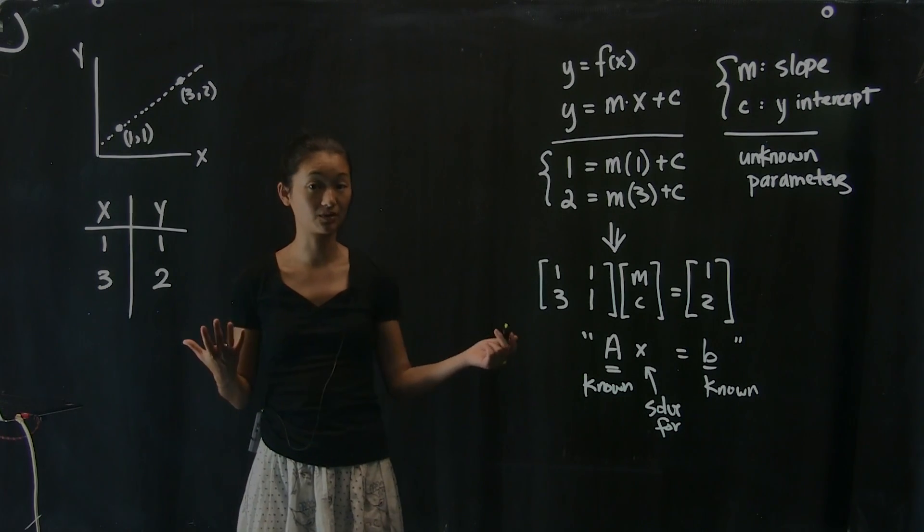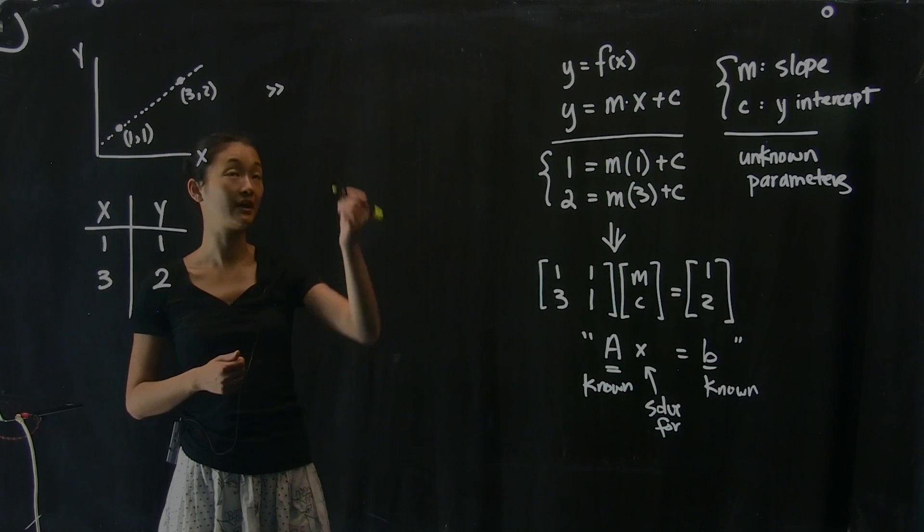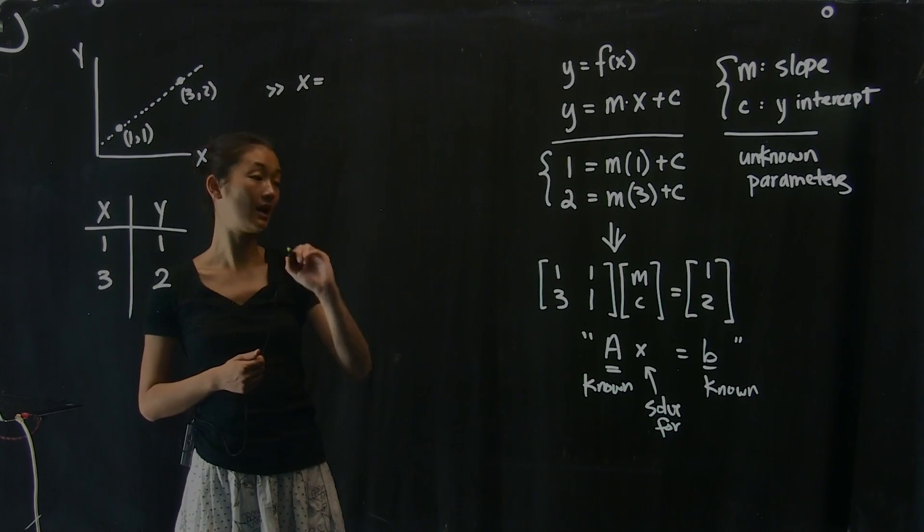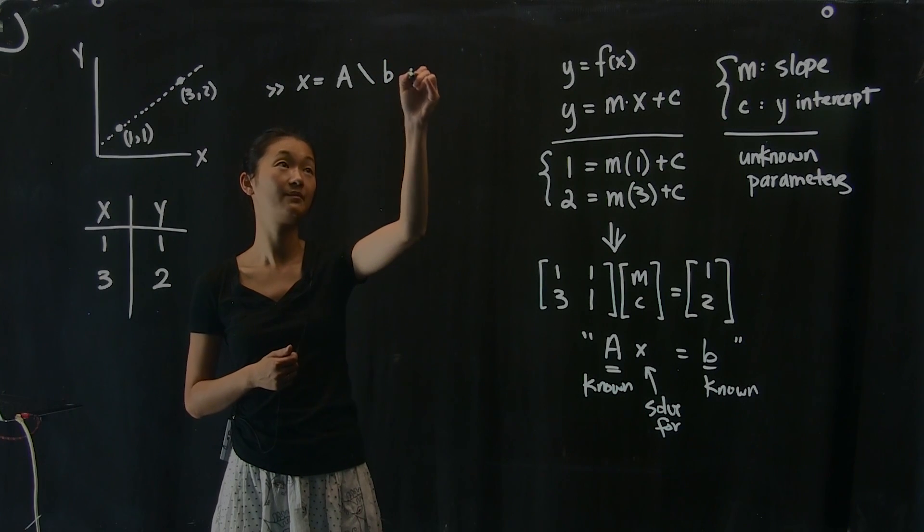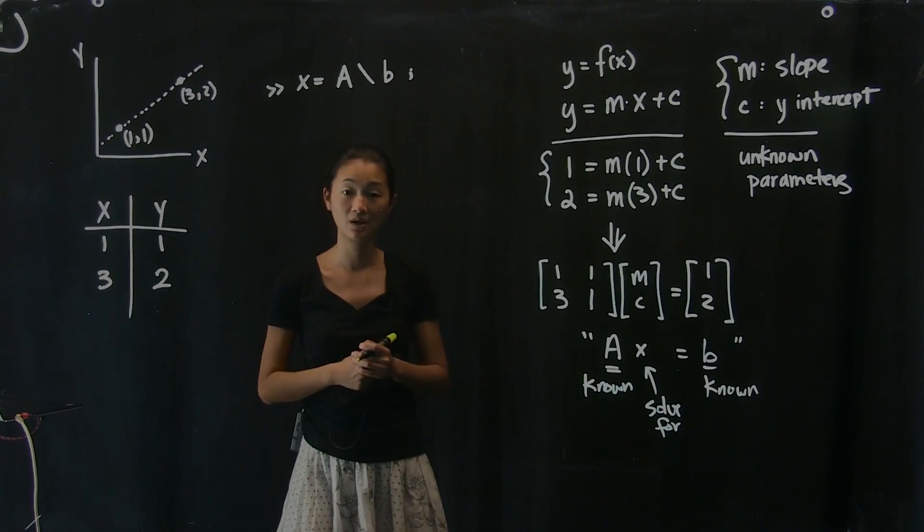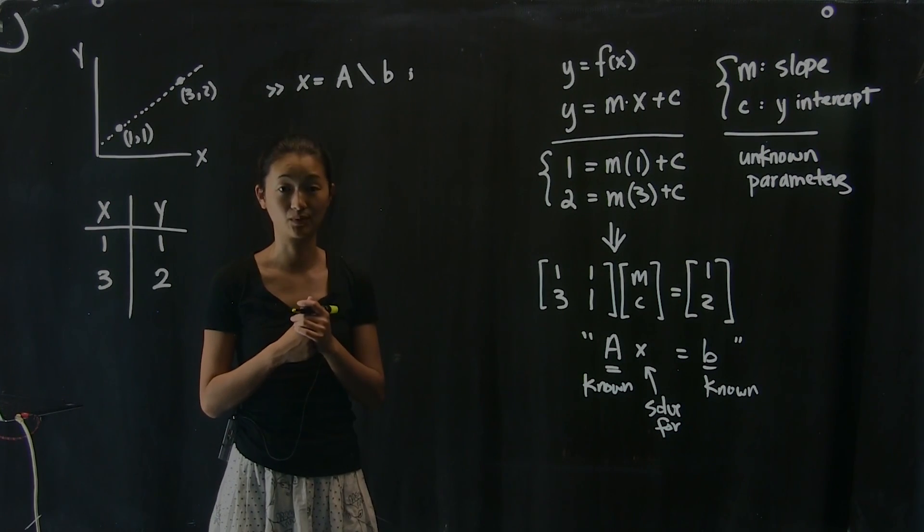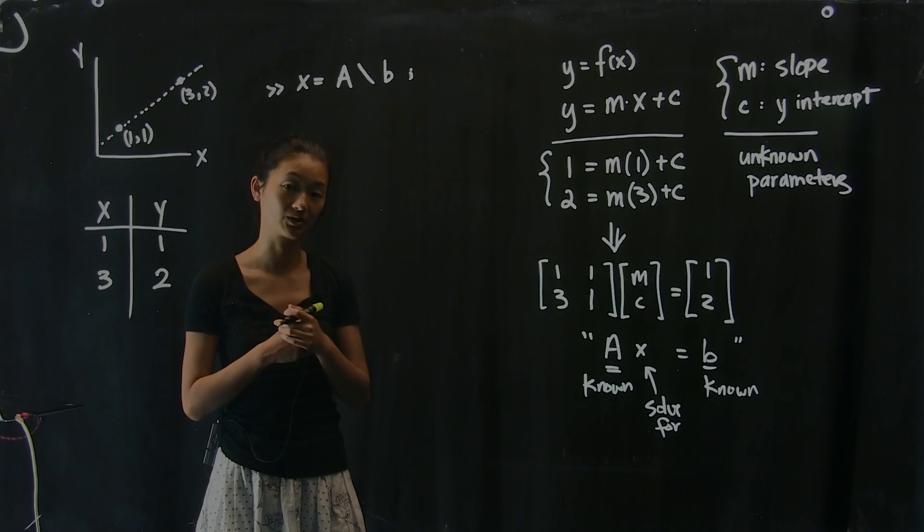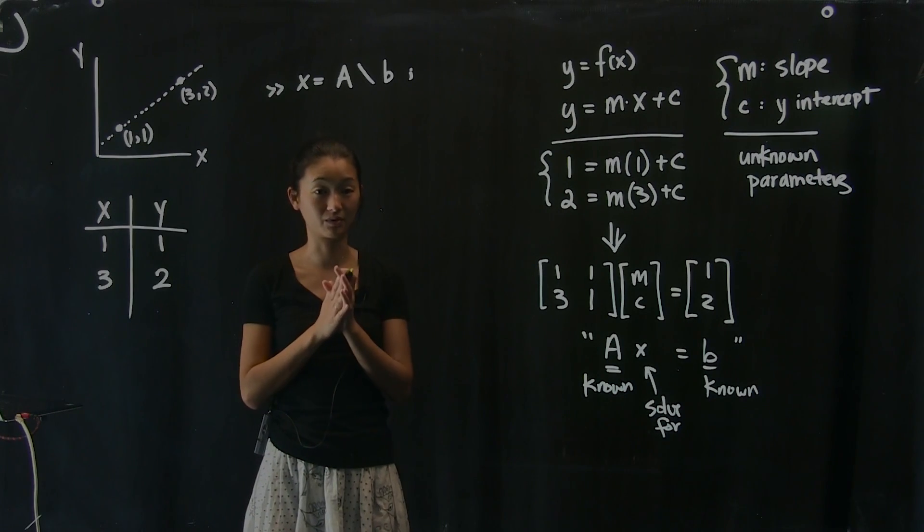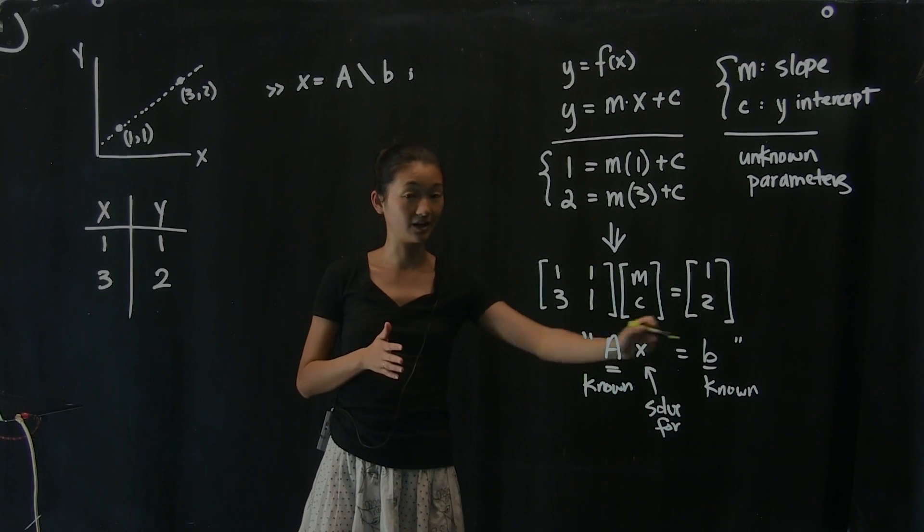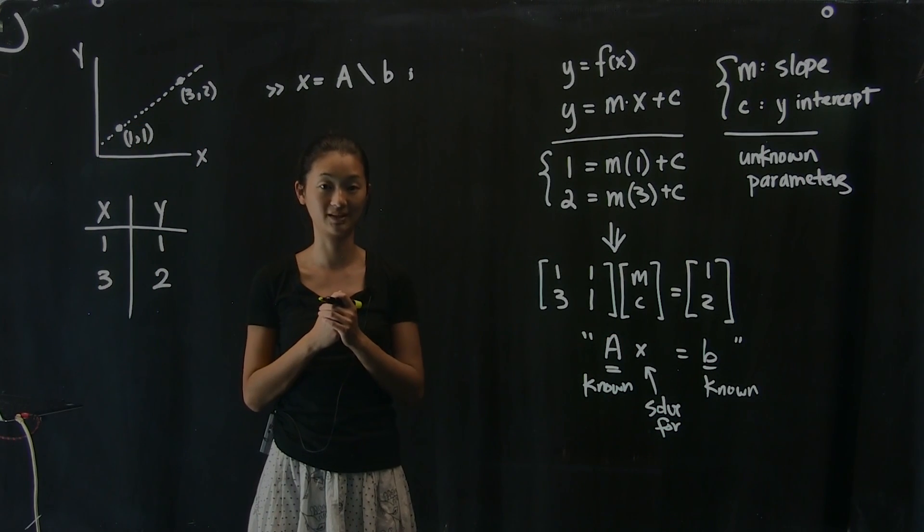So remember, there's a couple different ways you can do this computationally. And in MATLAB, you can either do x equals A backslash b. That will give you the right answer. Or you can actually compute the inverse of A explicitly and use that to solve it as well. In this case, it'll probably give you the same answer. So this is how you would set up a system of equations with unknowns and knowns in order to fit a line through two points. And next time we'll talk about more than two points.